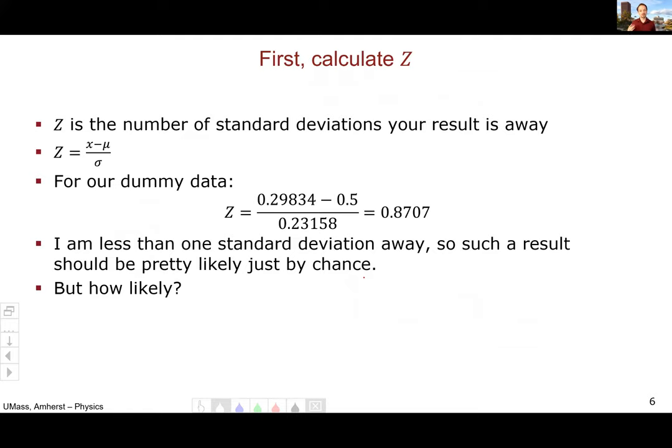So the first step is we calculate what's known as z, which is the number of standard deviations your result is away from the mean. I would take my value in this case 0.30, and I would subtract the mean 0.5 and divide by my standard deviation. In this particular case, I would be minus 0.8707. So that means that I'm 0.8707 standard deviations below the mean. So I'm pretty close. I'm within one standard deviation.